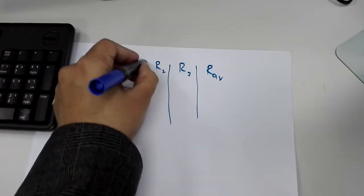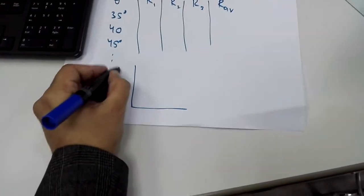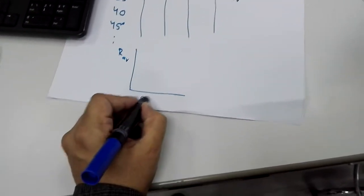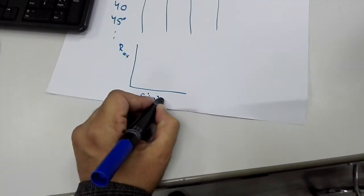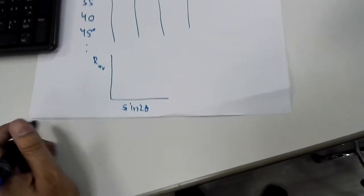Okay, so once we have the data, we have an average value. We make a plot of our average versus sine 2 theta.